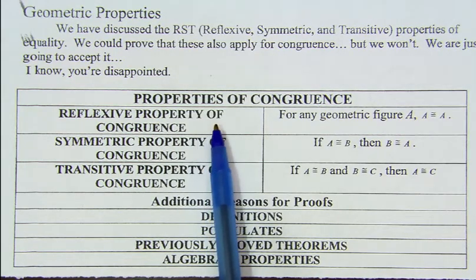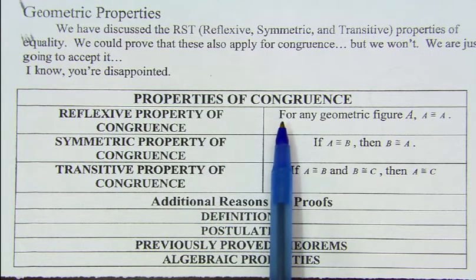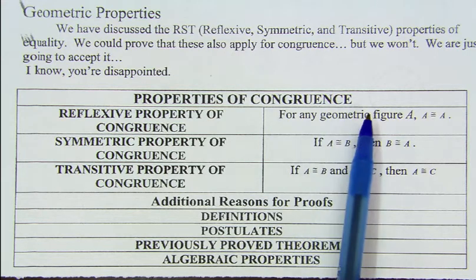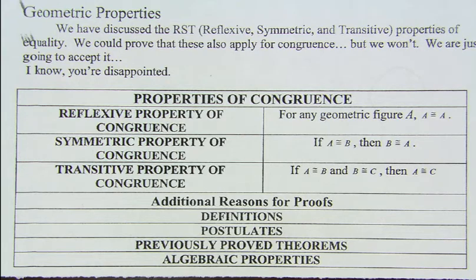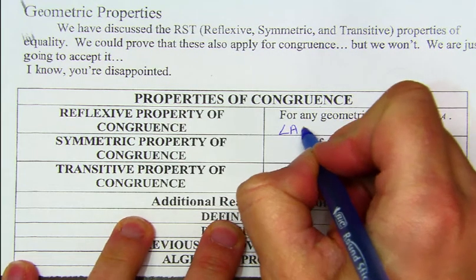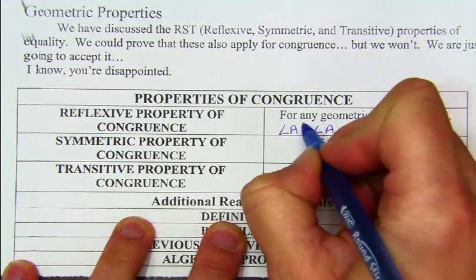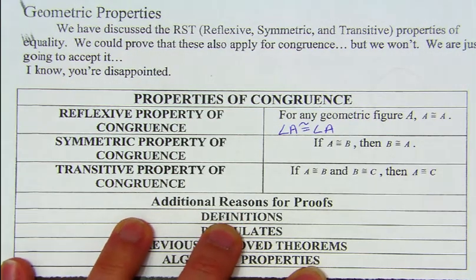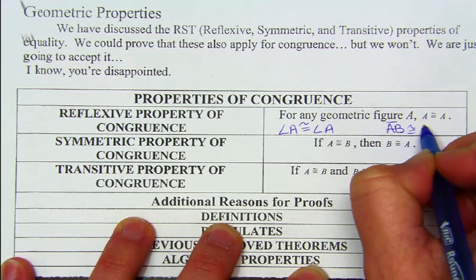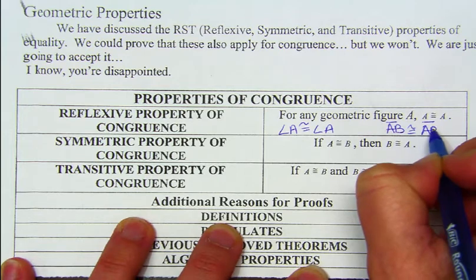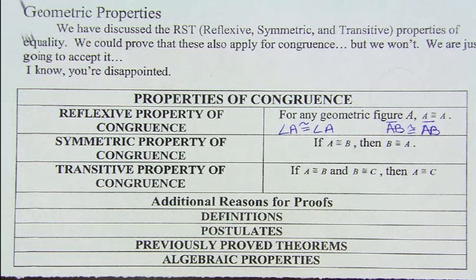The reflexive property says, basically, for any geometric figure, A is going to equal A. So A could be an angle — angle A could equal angle A, or angle A is congruent to angle A. It could also be for a side, so we might have something like side AB is congruent to side AB. Basically, the reflexive property just says that anything is equal to itself.